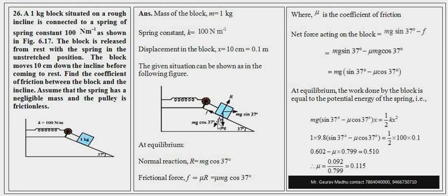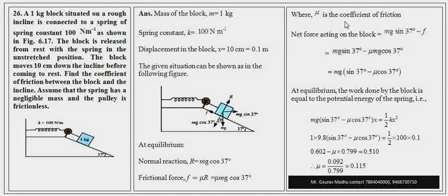क्योंकि block ने surface पर mg cosθ से action किया, तो reaction भी mg cosθ हुआ। फिर friction का formula है μ into N, जहाँ μ coefficient of friction है। N की value यहाँ mg cosθ है, तो friction = μ mg cosθ।